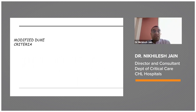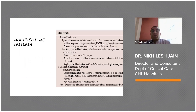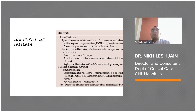Modified Duke's criteria would include a positive blood culture — typical microorganism for infective endocarditis from two separate blood cultures — it could be viridans streptococcus, streptococcus bovis, HACEK group of organisms, staph aureus, or community acquired enterococci in the absence of a primary focus. Or persistently positive blood cultures defined as recovery of microorganisms consistent with infective endocarditis from blood cultures drawn more than 12 hours apart, or all of three or a majority of four or more separate blood cultures with the first and last drawn at least one hour apart.